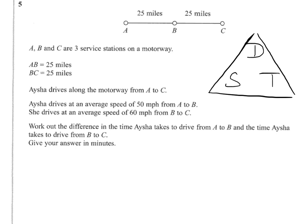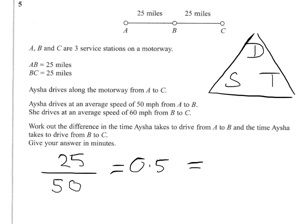Let's start off by working out how long it took her to go from A to B. We divide our distance, which is 25 miles, by the speed we were travelling at, which was 50 miles per hour. So we're in the unit of hours — 25 divided by 50 gives us 0.5 hours. We can convert that by multiplying by 60, but you should know that 0.5 of an hour is 30 minutes. So that's how long the first part of the journey takes: 30 minutes.